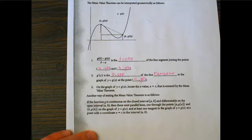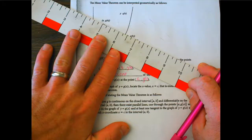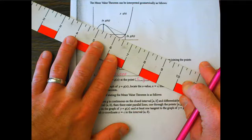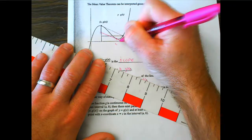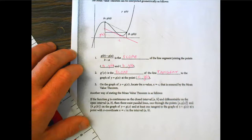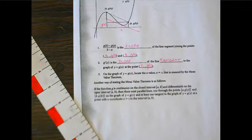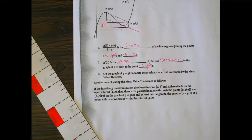G prime of c is the slope of the line tangent to the graph of y equals g of x at the point (c, g(c)). On the graph, locate x equals c — that is what the mean value theorem ensures. We have our secant slope, and we shift down until we find the point of tangency, which gives us c and g of c.